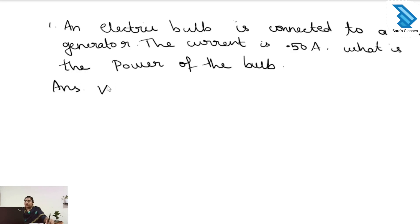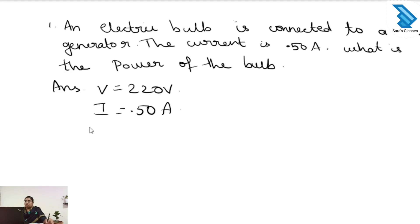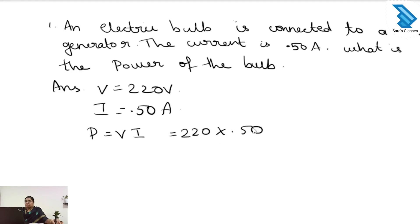In the question, what is given? The voltage is given as 220 volt and the current is given as 0.50 ampere. We have to find the power. We know that the equation to find the power is P equal to V into I. V is given and I is also given, so we can directly substitute the values. P equals 220 multiplied by 0.50, so the answer is 110 watt.